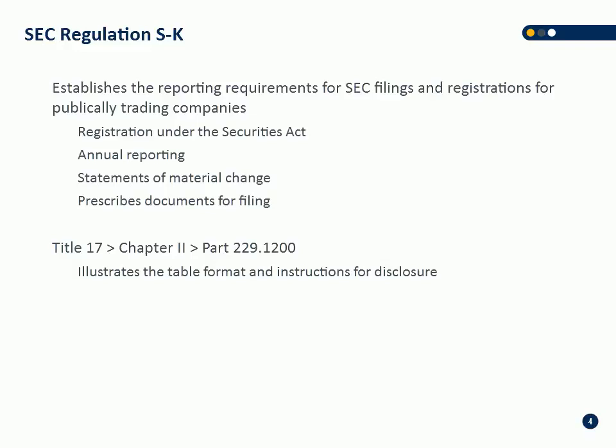The first regulation, Regulation S-K, establishes the reporting requirements for SEC filings for publicly traded companies — the guidelines for what needs to be disclosed and the format it needs to be disclosed in. It covers annual reporting, states of material change, and prescribed document filings, so very similar to NI 51-101. It has a number of sample tables that show you exactly how you should be formatting documentation in your public disclosure.